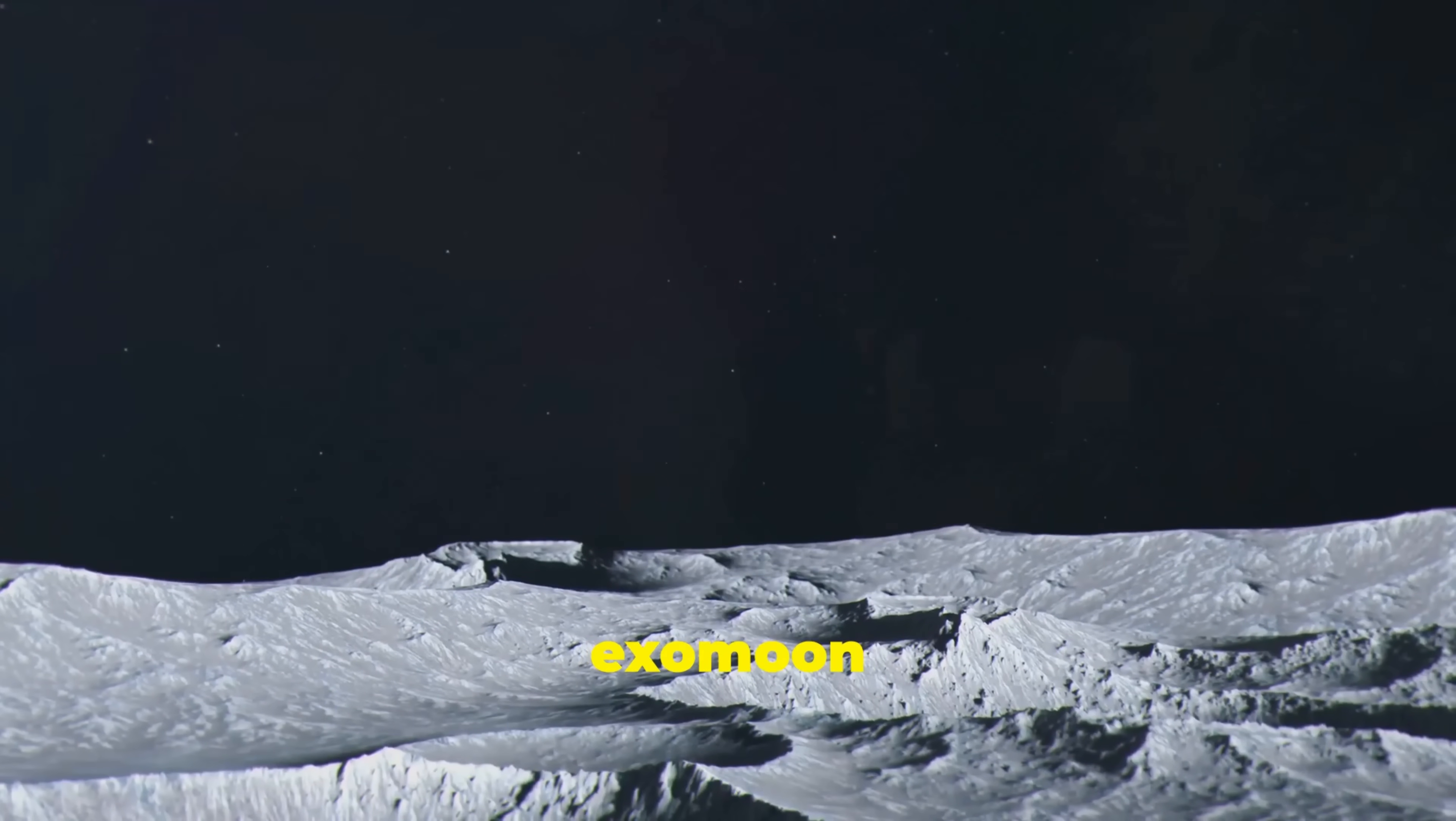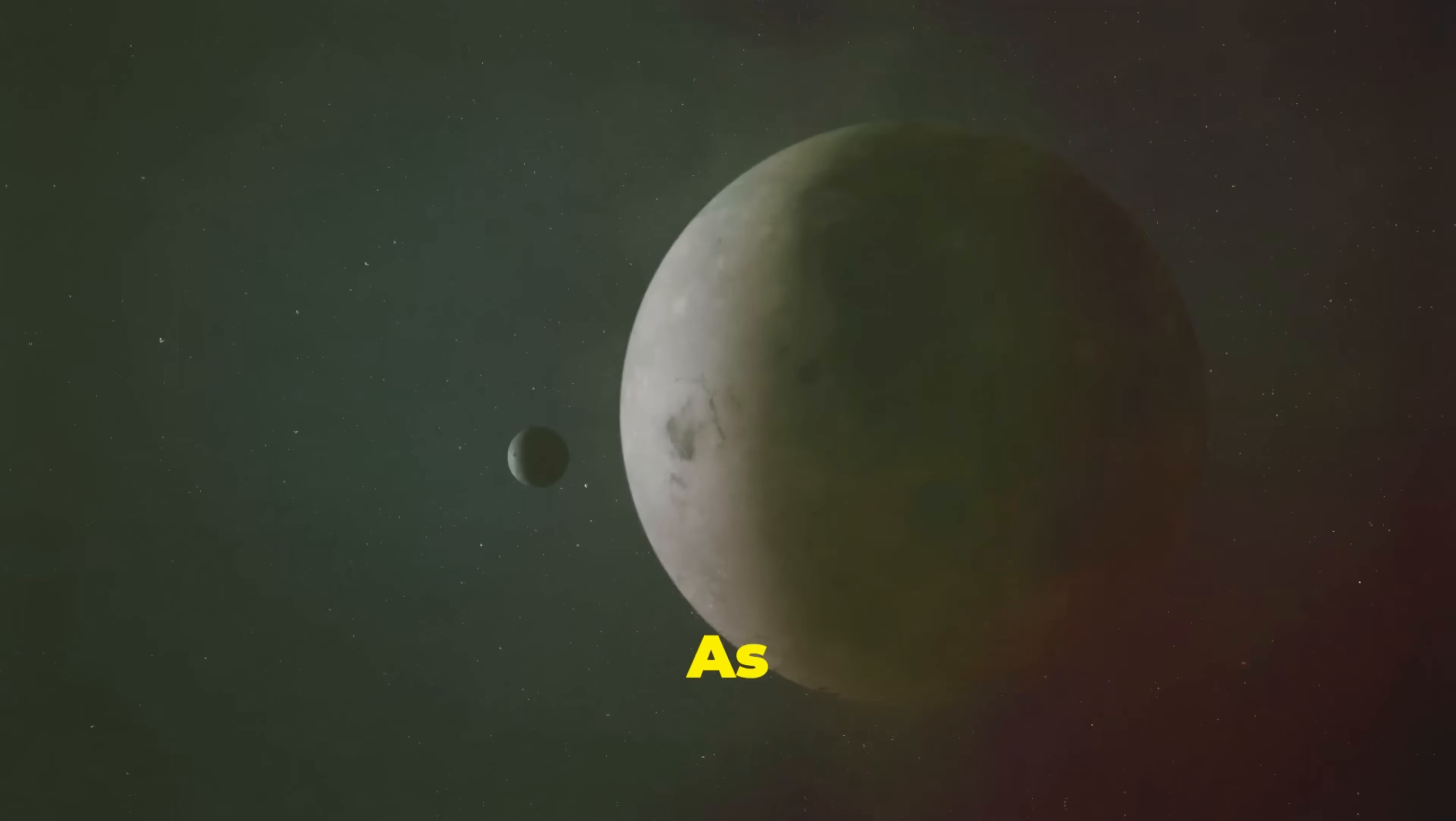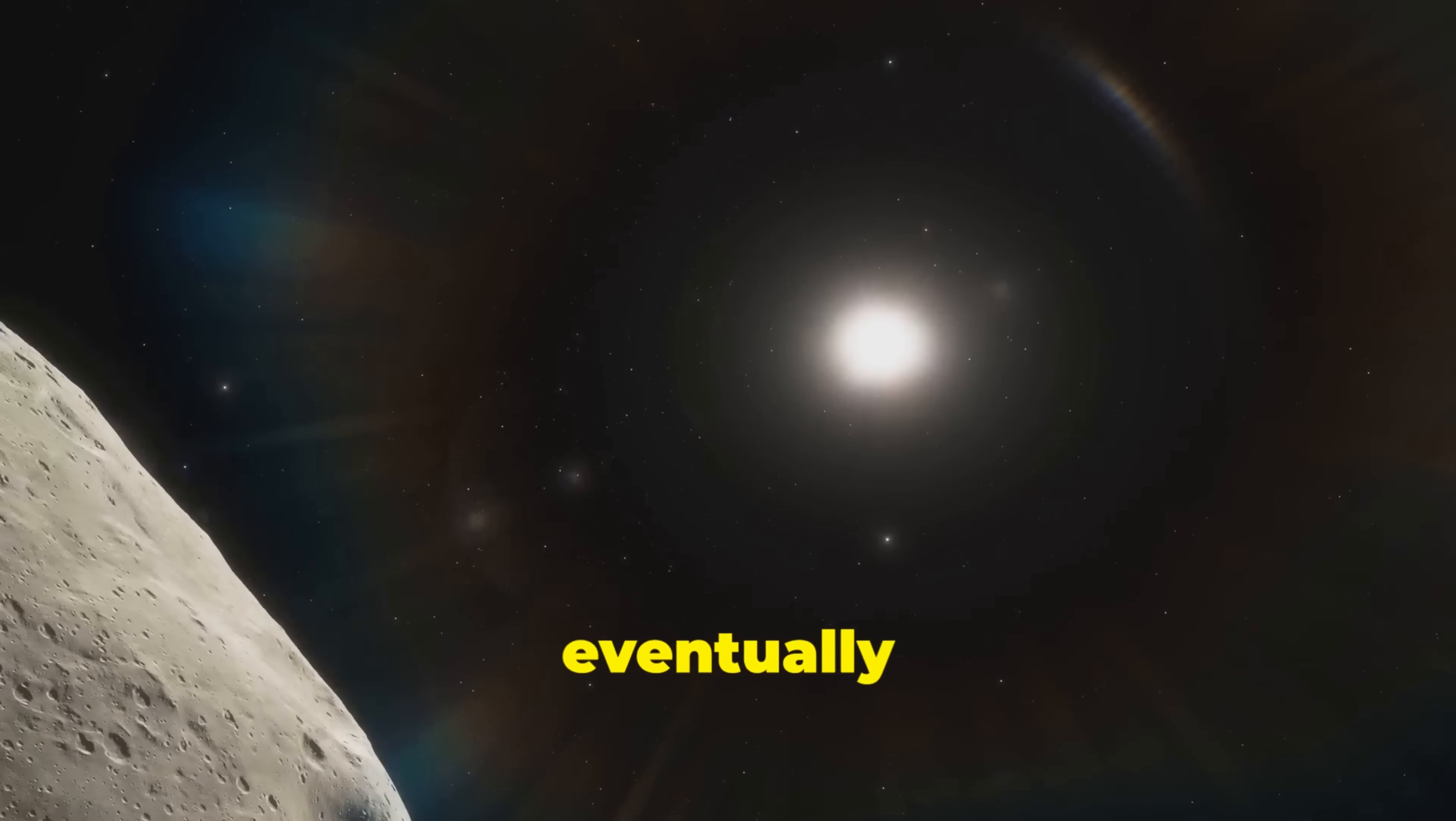But what's the kicker? This exomoon could be on a path to destruction. As it orbits closer to WASP-49b, it might eventually break apart.